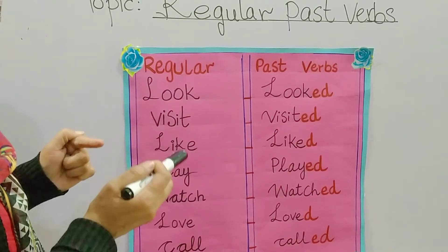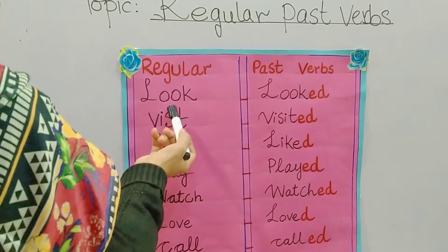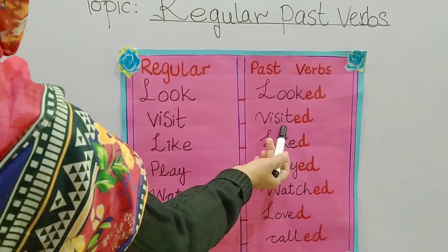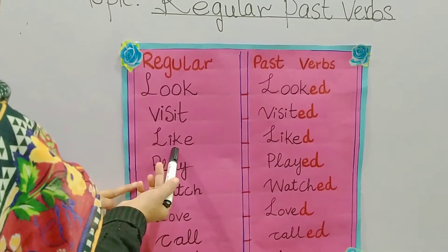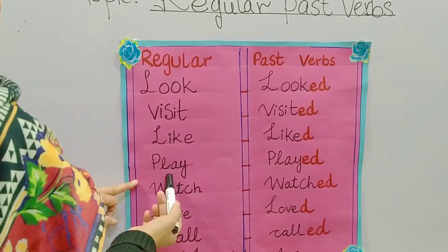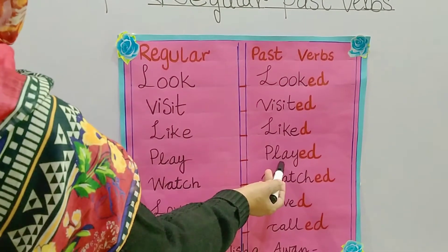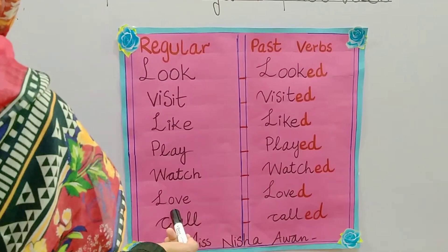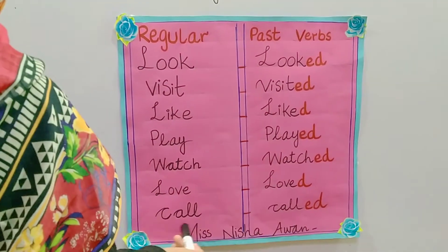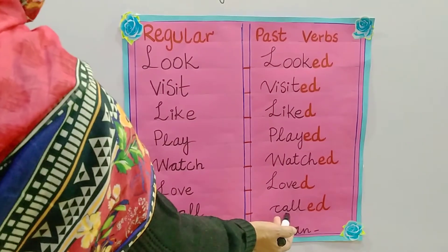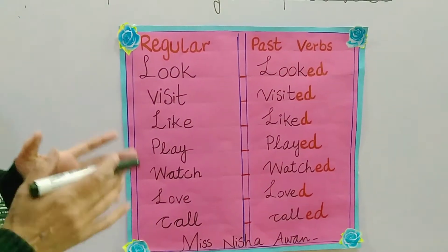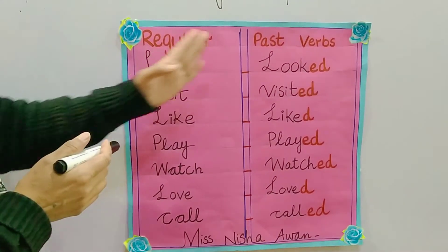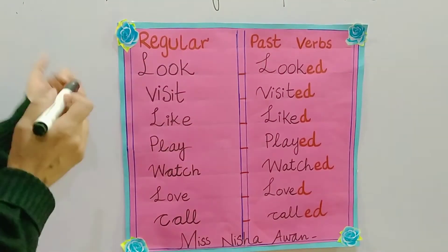There is only one set pattern to make regular past verbs. Here you can see: 'look' is changed into 'looked', 'visit' is changed into 'visited', 'like' is changed into 'liked', 'play' is changed into 'played', 'watch' is changed into 'watched', and 'love' is changed into 'loved', 'call' is changed into 'called'. For better understanding, we can learn regular past verbs in a complete sentence.